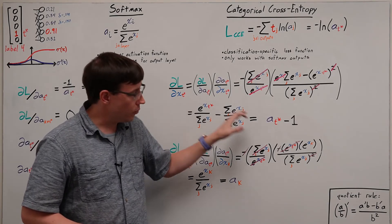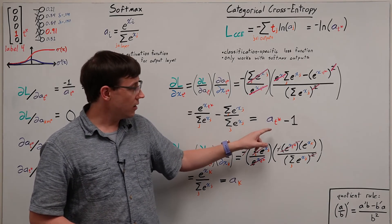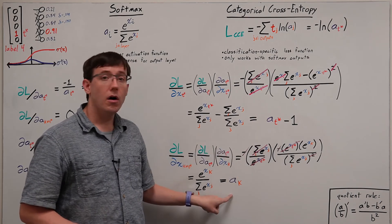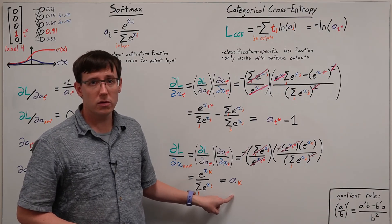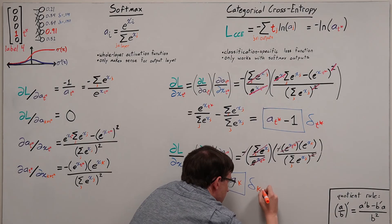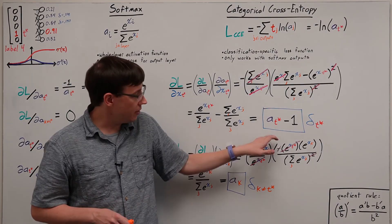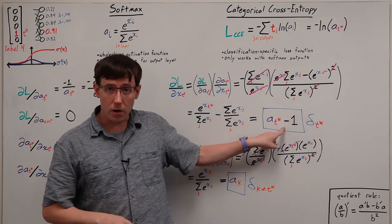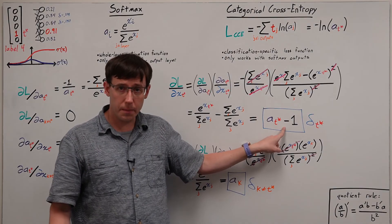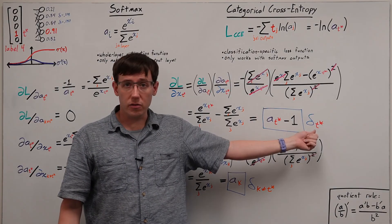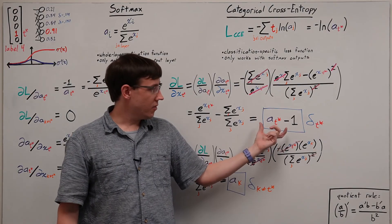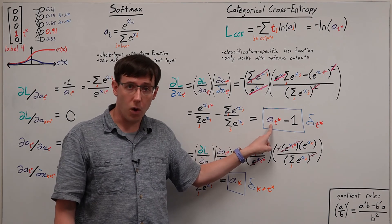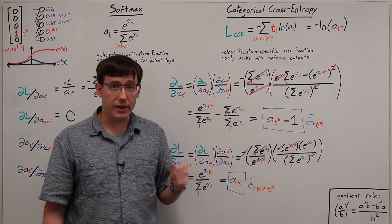So what we've derived here are formulas for computing the deltas for the node where the target was one, and all of the other output layer nodes. And if we now think about how these deltas will perform as part of a gradient descent update, for the neuron where we wanted the target to be one, we get a negative value for delta, and that value will be closer to zero the closer the activation gets to one.